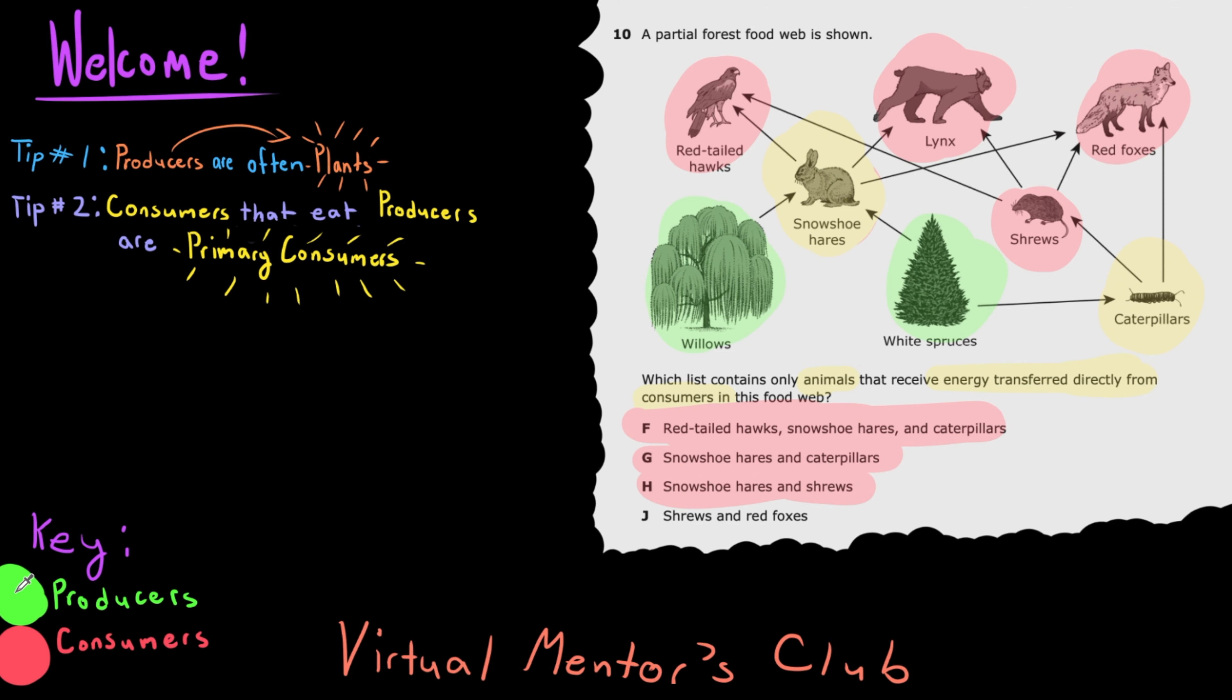But option J is correct because it only includes consumers that receive energy from other consumers, aka all animals that are not primary consumers, shrews and red foxes.